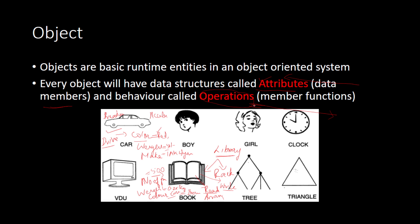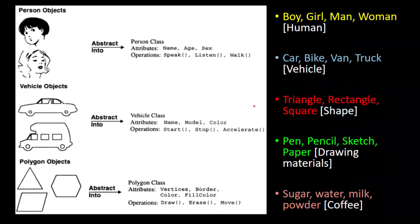When we have a set of similar objects, we can call them a class. For example, we have objects like boy, girl, man, and woman which are similar in nature.